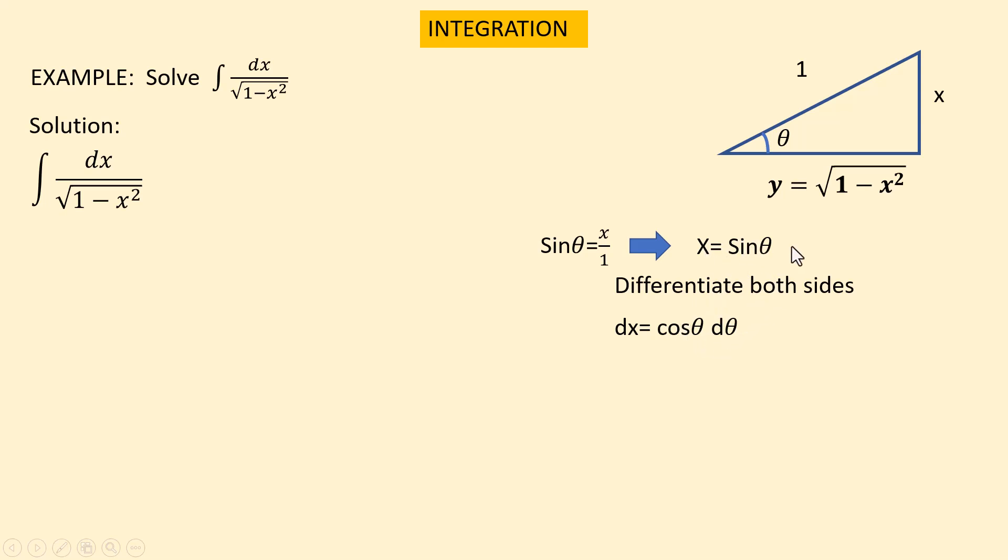Now we can substitute these two relations in this integral. It becomes dx equals cosine theta d theta, and we can put sine theta instead of x squared. It becomes square root of 1 minus sine squared theta.